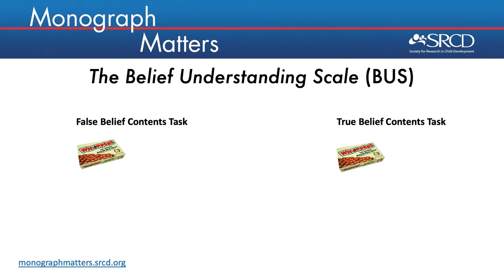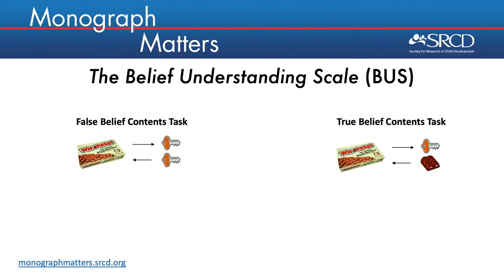In both tasks, children are initially asked what they think is in the container before they are shown that it contains something unexpected — in this example, a key, but it can be any child-friendly object the child would be familiar with. We let the child hold the item briefly in both tasks after it is removed from the box; holding the item helps the child remember what was inside. In the false belief variant, the unexpected object is placed back inside the box, whereas in the true belief variant, the expected item is placed back and the unexpected item is set aside. Children are then asked what someone else will think is inside the box, and why that person will think that.